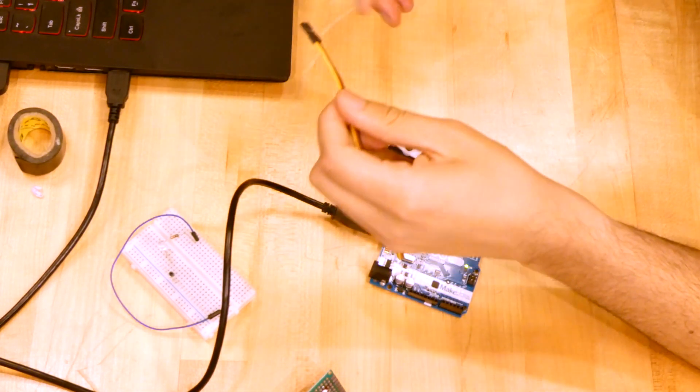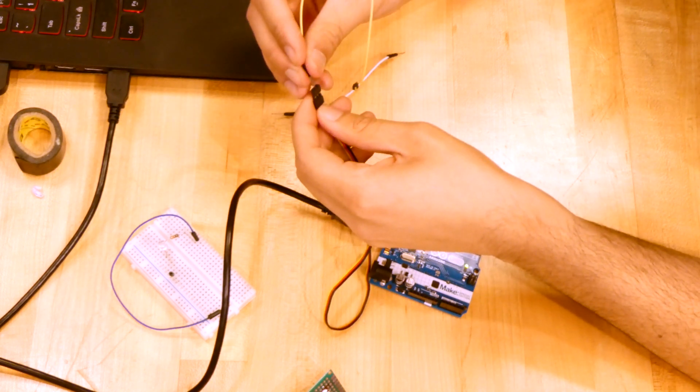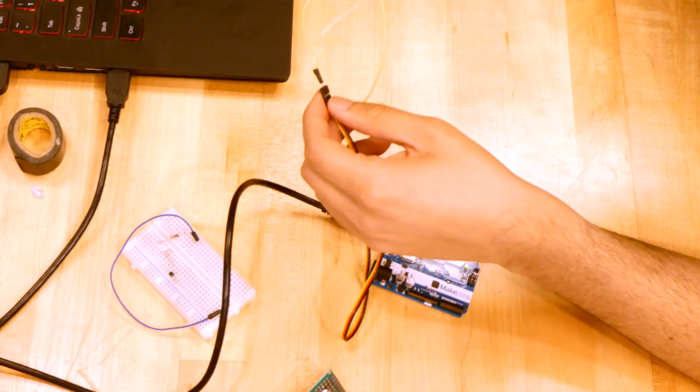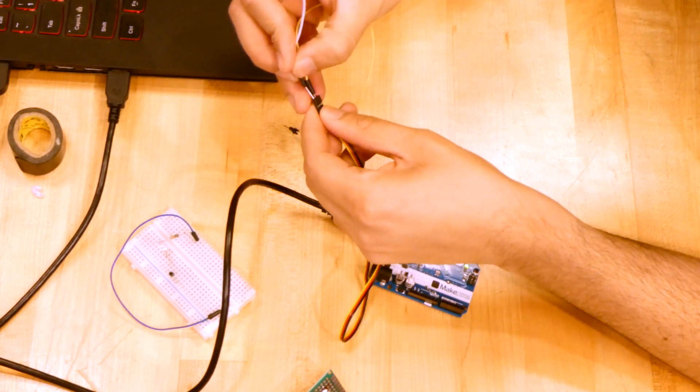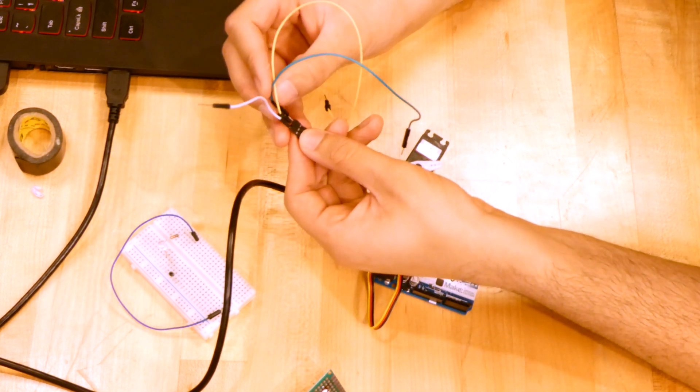So I'm just going to wire this up like normally. I'm going to use yellow for power, white for signal, and then green for ground.